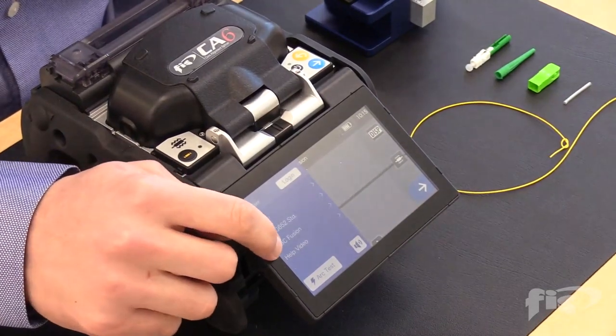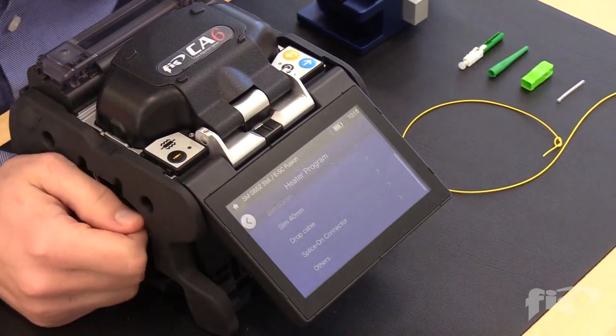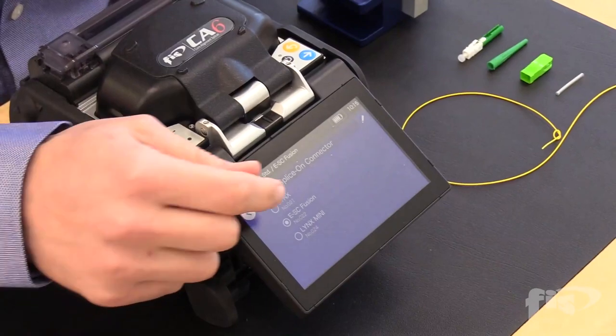For the oven setting, click on the menu icon and select E-SC Fusion. Next, select splice-on connector after that E-SC Fusion.